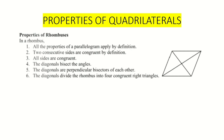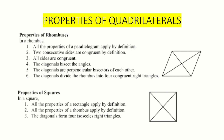Then we have the properties of a rhombus. In a rhombus, all the properties of a parallelogram apply by definition. Number two, two consecutive sides are congruent by definition. Number three, all the sides are congruent. Number four, diagonals bisect angles. Number five, diagonals are perpendicular bisectors of each other.